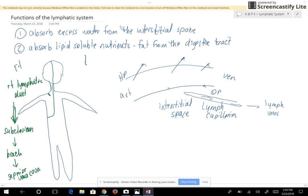On the left side of the body you can see that we have the left head, the left neck, the left arm, the left thoracic cavity, all of the abdominal cavity, and both legs. These are all going to empty into the thoracic duct.